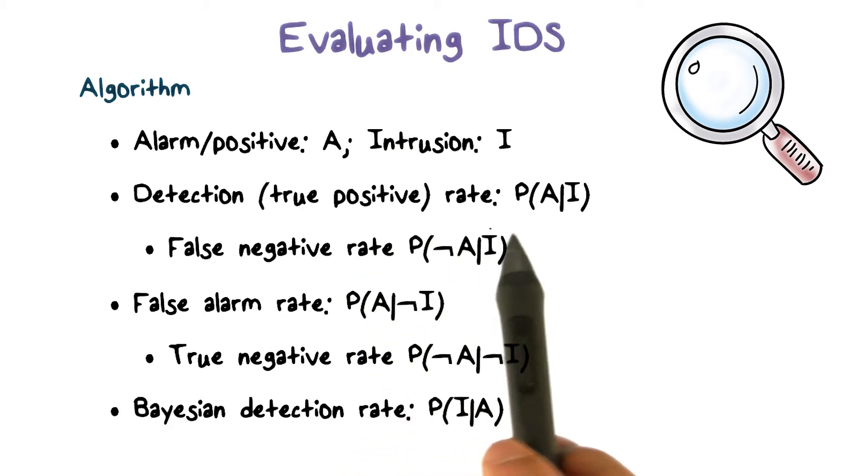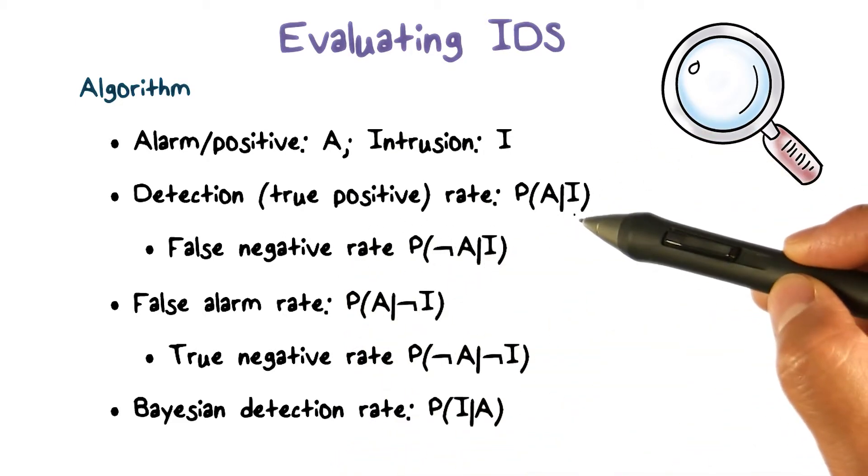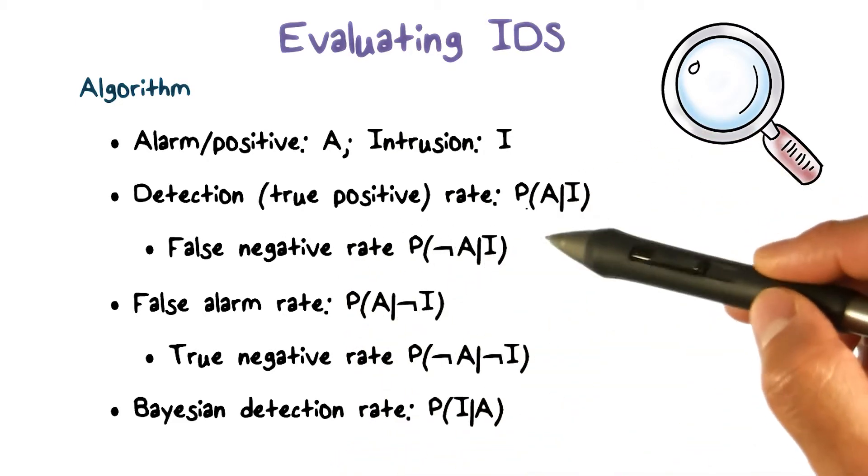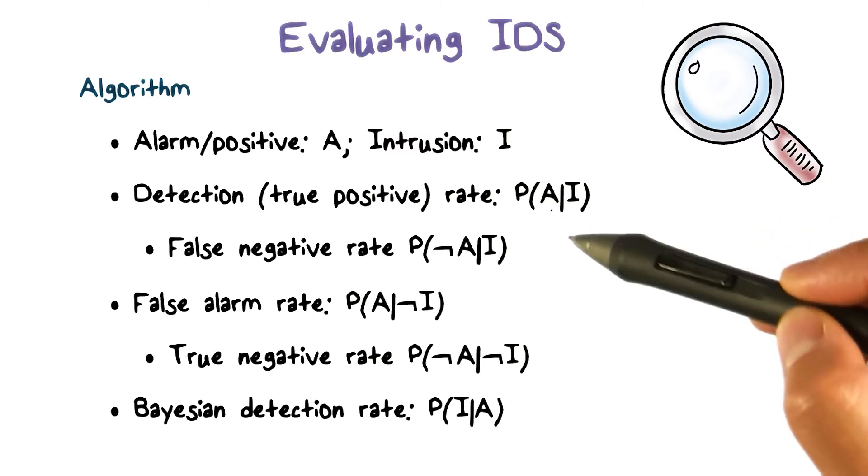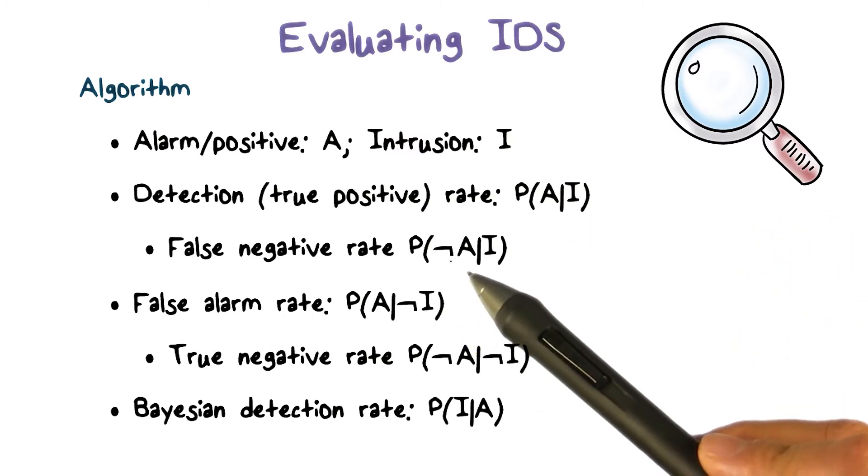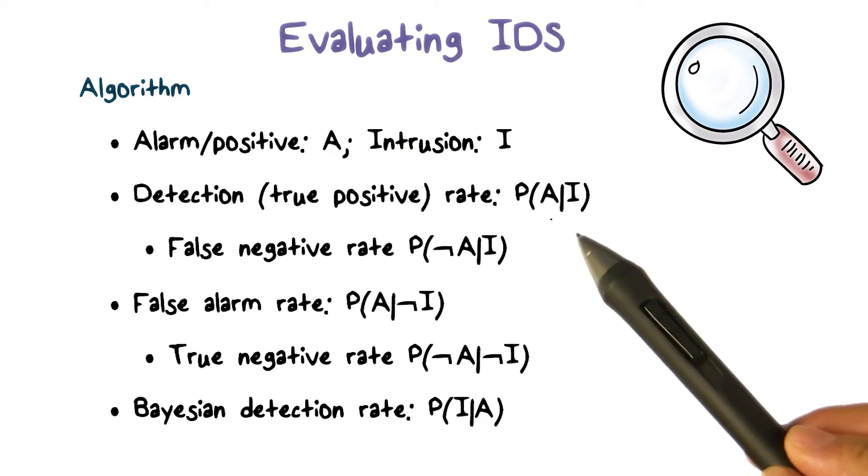Detection rate, or true positive rate, is the probability that, given there's an intrusion, how likely the IDS will produce an alert. And false negative rate is one minus true positive rate.